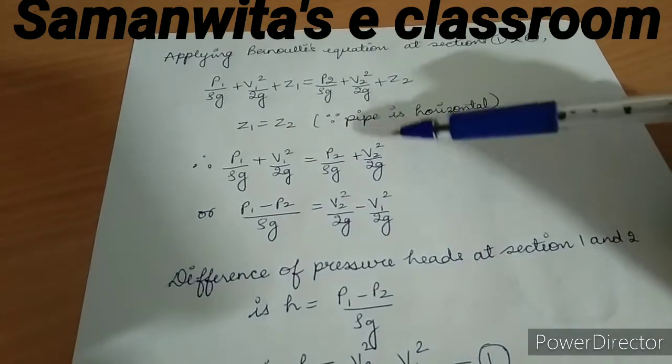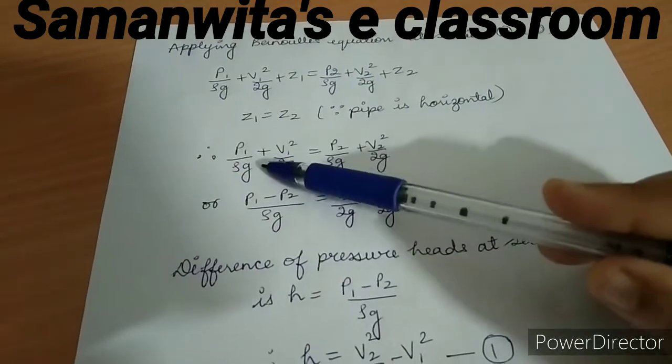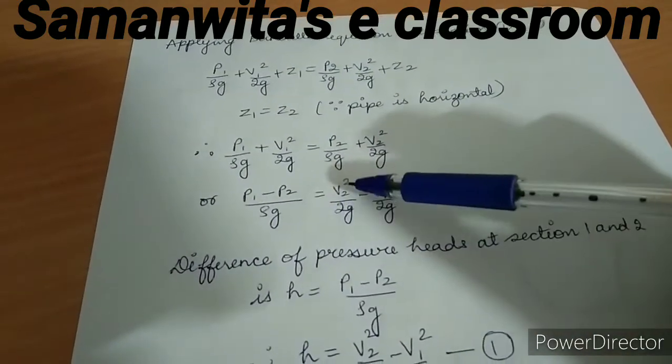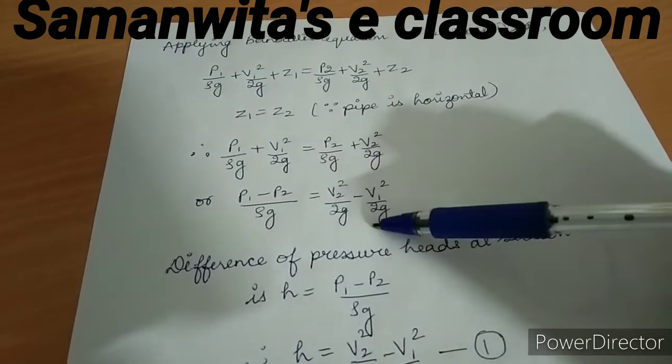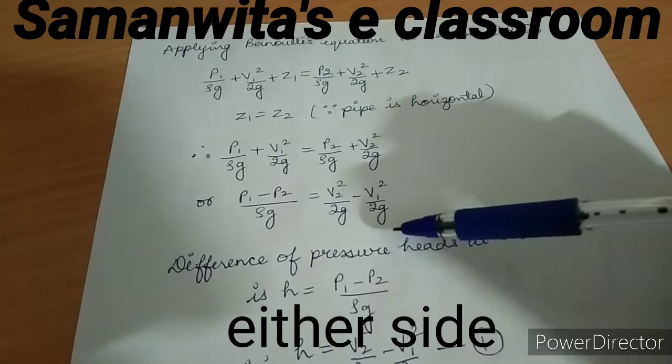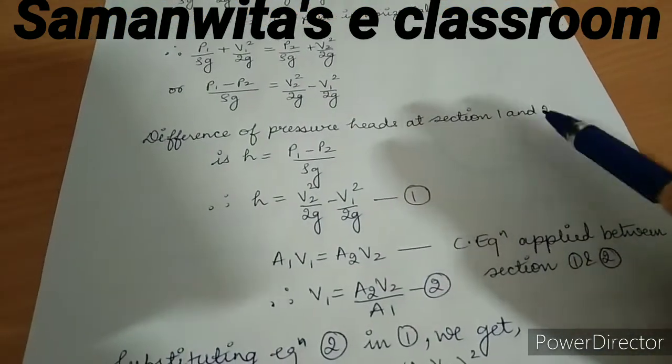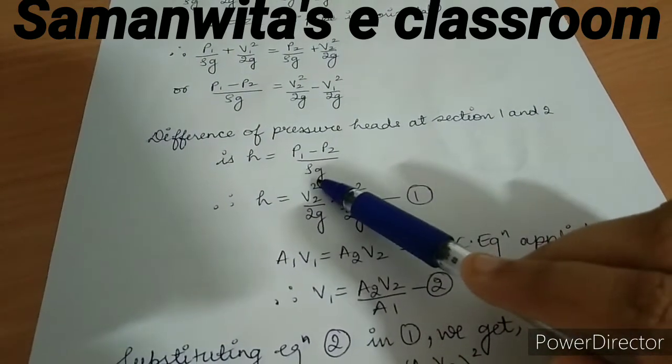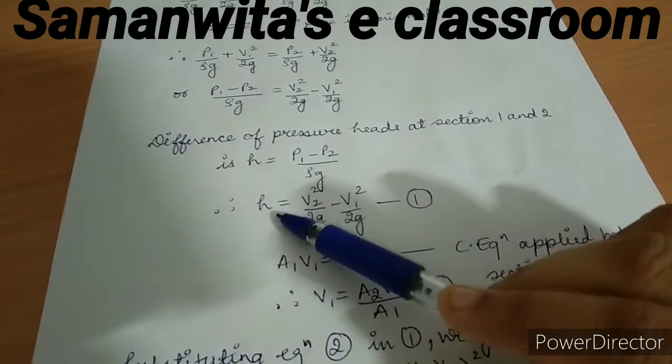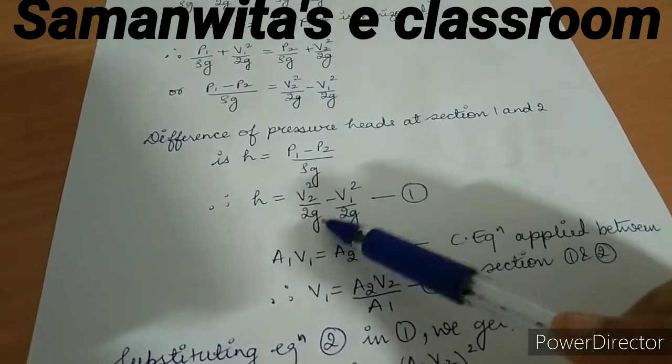Or I can say (p1 - p2)/ρg = (v2² - v1²)/2g. Here I have taken the pressure and velocity terms on the same side. The difference of pressure head at sections 1 and 2 can be written as (p1 - p2)/ρg, so this h can also be substituted here and you can get v2²/2g - v1²/2g. I mark this as equation 1.